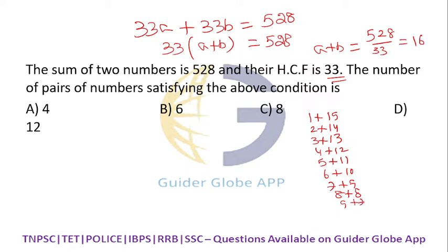What is the HCF of 1 and 15? HCF is 1, wherever HCF is 1 we have to take that pair. What is the HCF of 2 and 14? HCF is 2, so rejected. For 3 and 13, what is the HCF? It's 1, accepted.